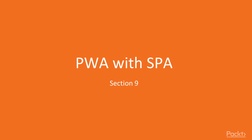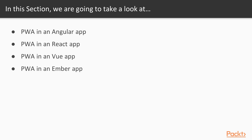In this section, we're going to look at four important front-end frameworks — Angular, React, Vue.js, and Ember.js — and convert them to a PWA. We're going to build a single-page application with each of these frameworks and then convert them to a Progressive Web App.